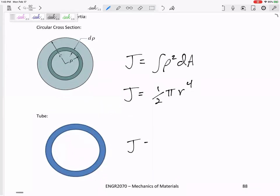For a tube, this is one half pi. You probably could have guessed this. R outer to the fourth minus R inner to the fourth. The book probably says C outer to the fourth minus C inner to the fourth. But C is just the outer radius.